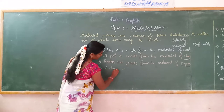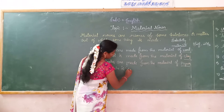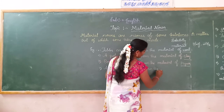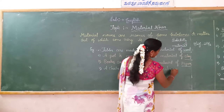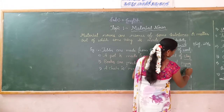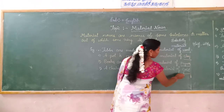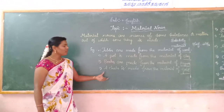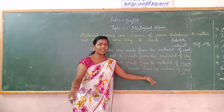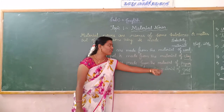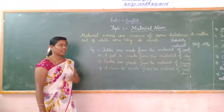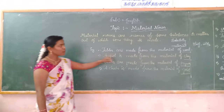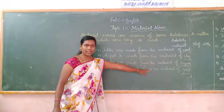A chain is made from the material of gold. Gold is the material. For using this gold, we prepare a chain. Also, a chain is made from the material of silver. So wood, clay, paper, and gold are the material nouns.